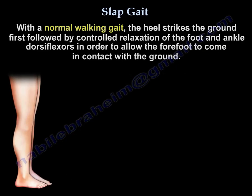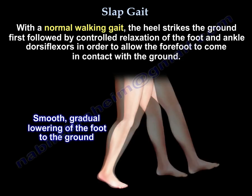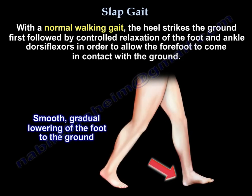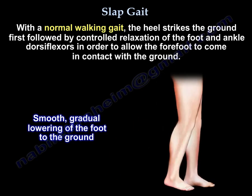With a normal walking gait, the heel strikes the ground first, followed by controlled relaxation of the foot and ankle dorsiflexors in order to allow the forefoot to come in contact with the ground.